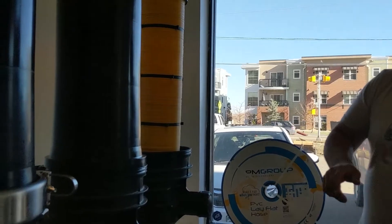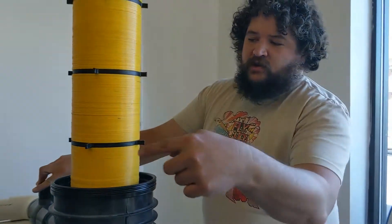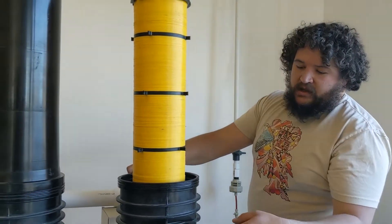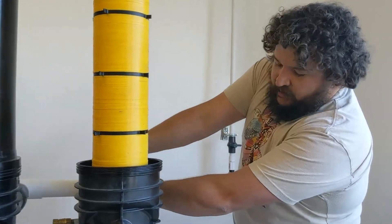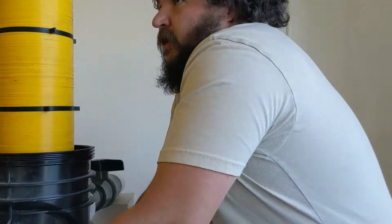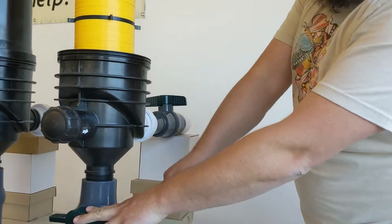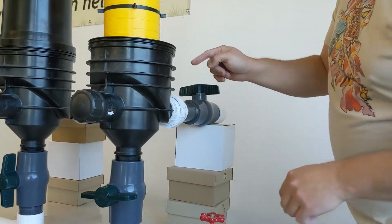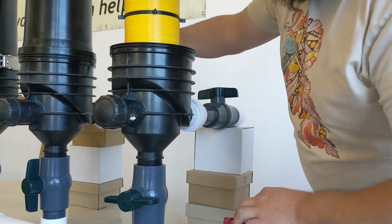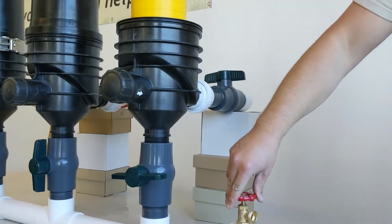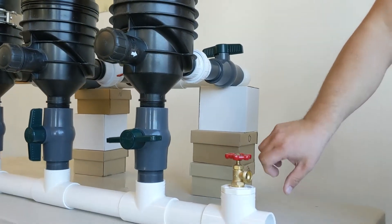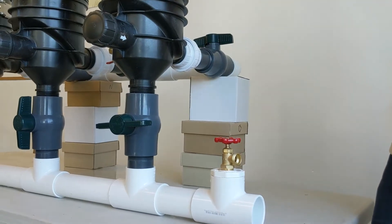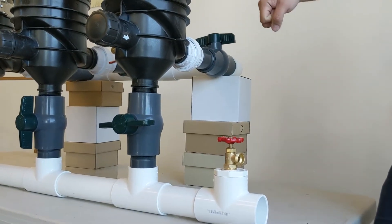We can actually isolate any individual filter by turning off the ball valves. So, say we want to clean this filter. I can turn off the incoming pressure and the outflow as well. Now there's no water flow going in here. There's still clean water being made through the other two filters. And because we have this hose bib on the downstream side, we can attach a hose with a little sprayer on it and use that to spray off the outside of this disk filter.